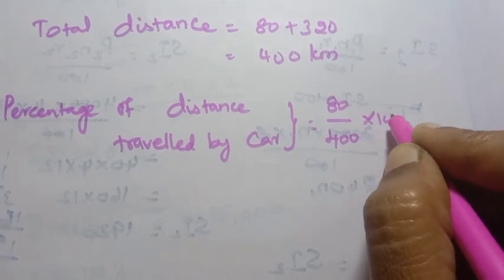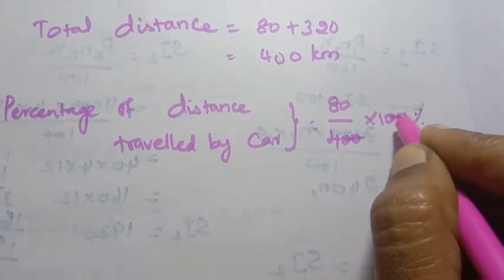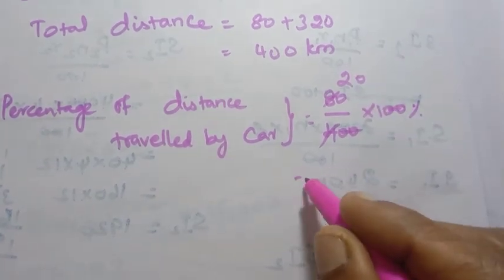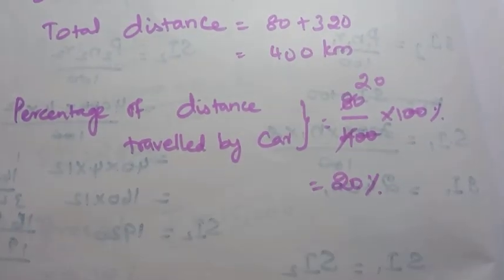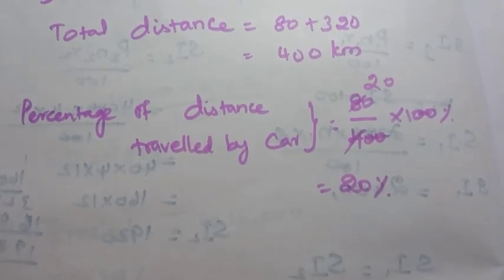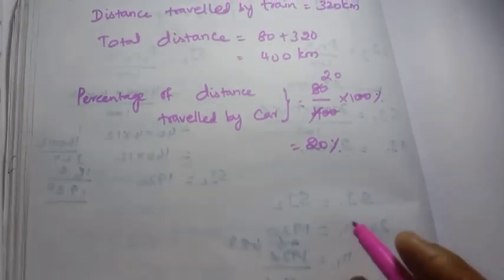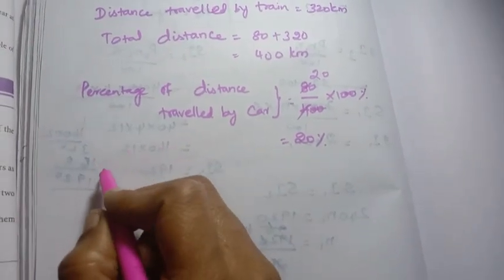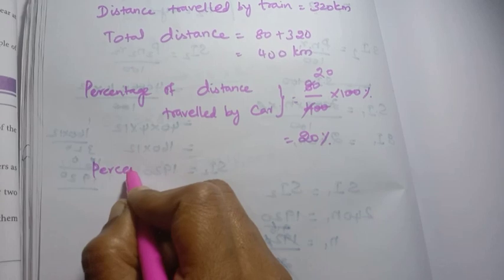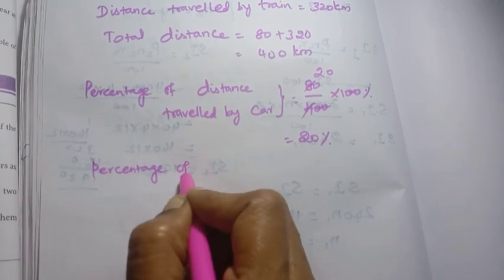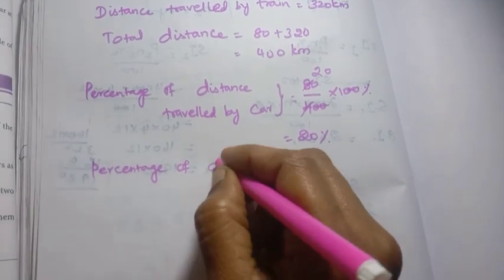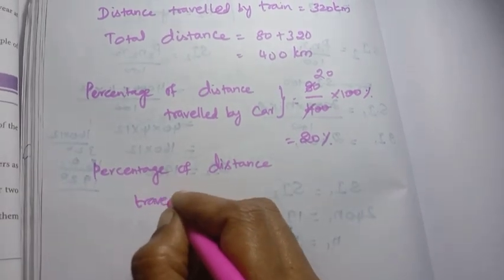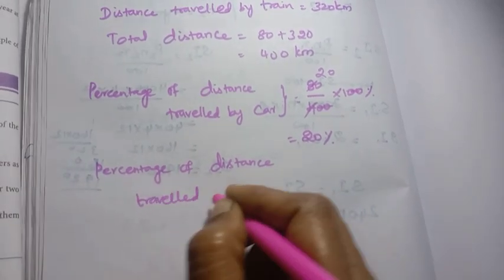Cancel the zeros. So 80 divided by 400 into 100 = 20 percent. So the percentage of distance traveled by car is 20 percent. Now we find the percentage of distance traveled by train.